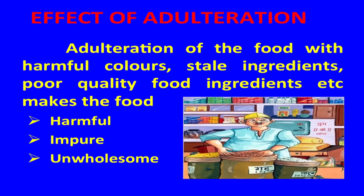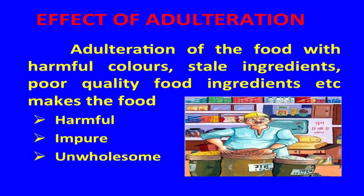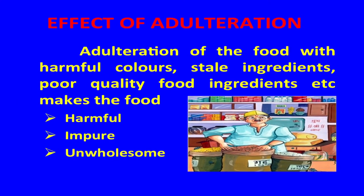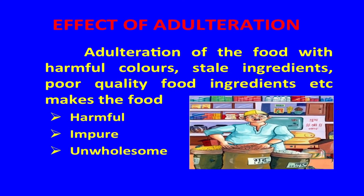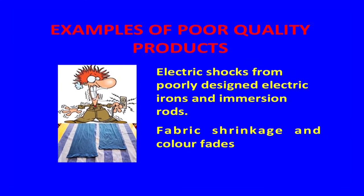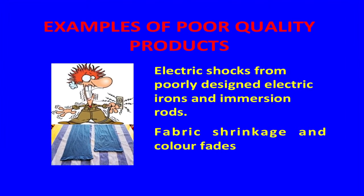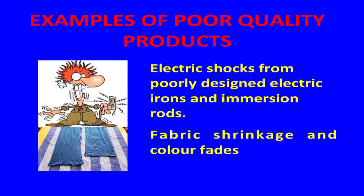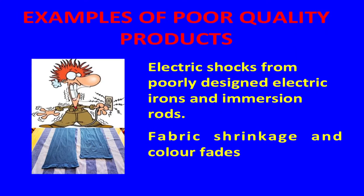Adulteration makes the product impure, unwholesome, and lowers product quality. Adulteration of food with harmful colors, stale ingredients, and poor quality items makes the food harmful and impure. Examples of poor quality products include electric shocks from poorly designed electric irons and immersion rods, switches getting fused very quickly within days of purchase, and fabric shrinkage and color fading.